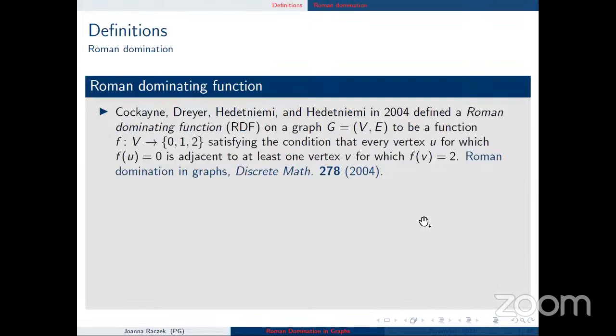What is a Roman dominating function? It was defined about 20 years ago by some researchers from North America. It is a function defined on the set of vertices of a graph G, assigning each vertex a number 0, 1, or 2, such that every vertex assigned 0 is adjacent to at least one vertex assigned 2. The first paper on this domination appeared in Discrete Mathematics in 2004, making it a relatively new domination concept.